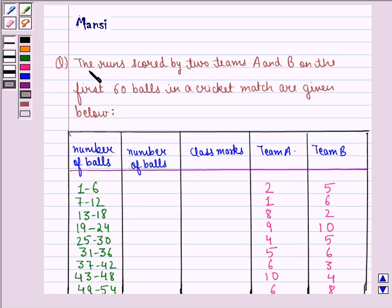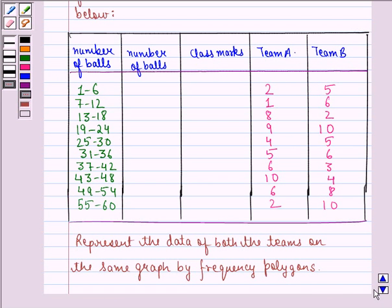The question says, the runs scored by two teams A and B on the first 60 balls in a cricket match are given below. Now the table given to us consists of number of balls, team A and team B.